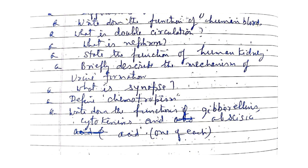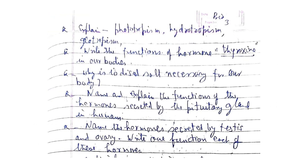Write down the function of cytokinin and abscisic acid. Explain phototropism, hydrotropism, and geotropism. Write the function of the hormone thyroxine in our body. Why is iodized salt necessary for our body? Name the hormones secreted by the testis and ovary.